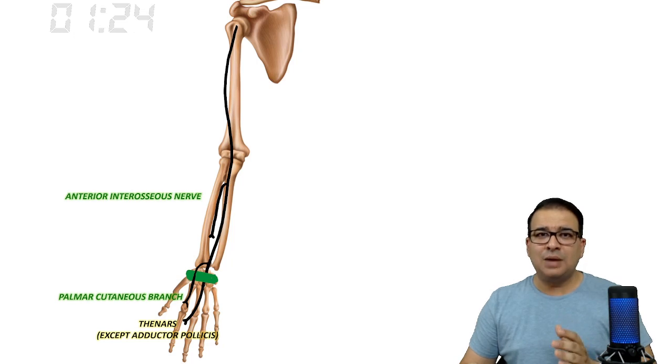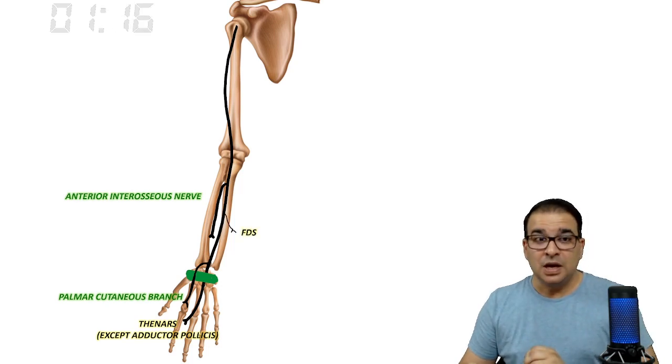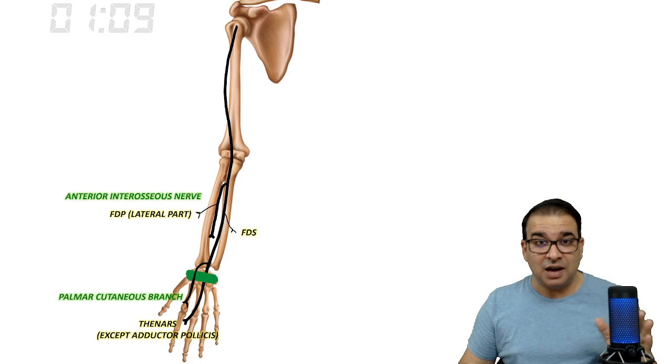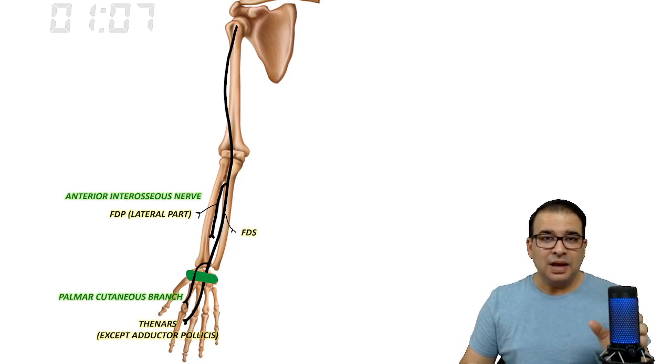The main median nerve in the forearm supplies superficial flexors, importantly flexor digitorum superficialis. The anterior interosseous nerve supplies the deeper muscles: flexor digitorum profundus (lateral half only—this is important) and flexor pollicis longus, the long muscle of the thumb.